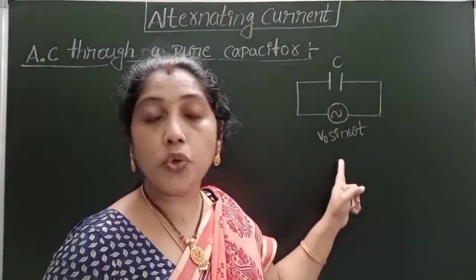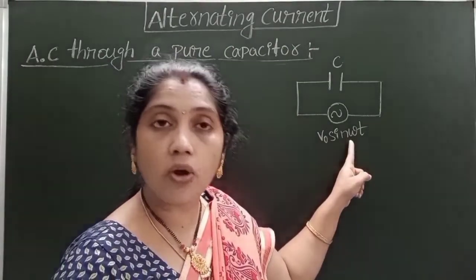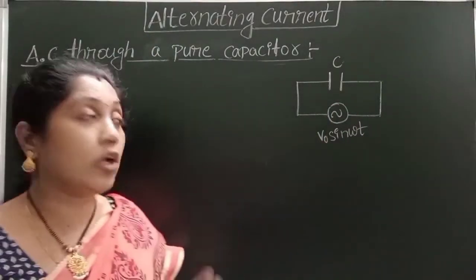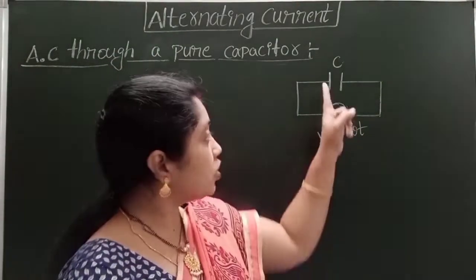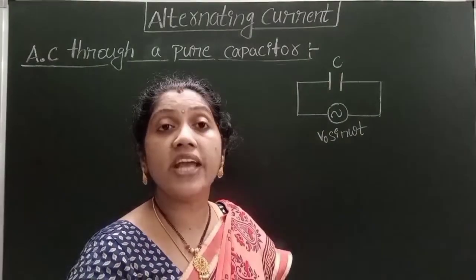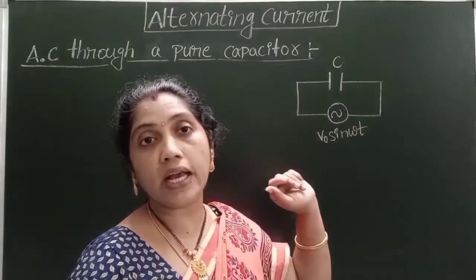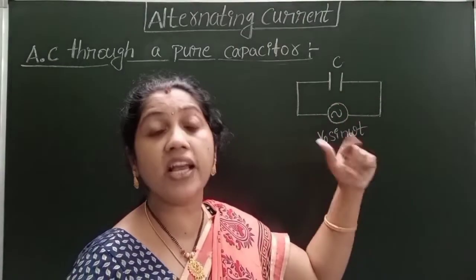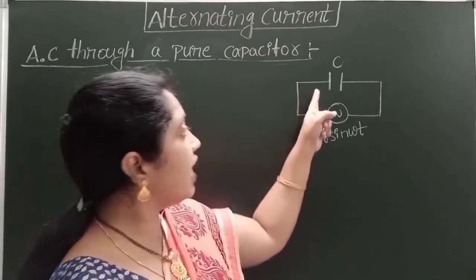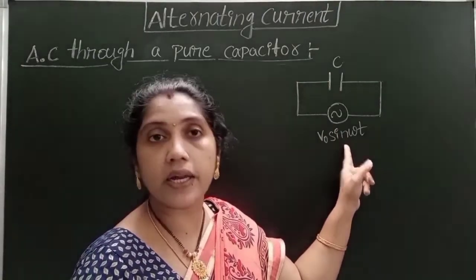When a capacitor is connected to an alternating source, the source provides an alternating EMF V₀ sin(ωt). This alternating EMF produces alternating current, causing the charge on the plates and the electric field between the plates to change with respect to time. Because the direction of the current changes periodically, the capacitor undergoes charging and discharging alternately. At any instant, the potential difference across the plates equals the EMF produced by the alternating source.